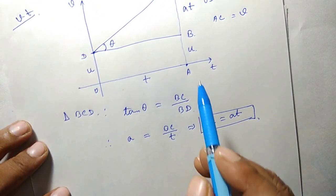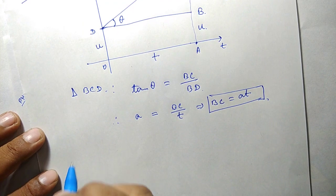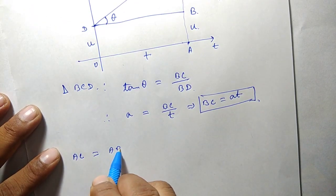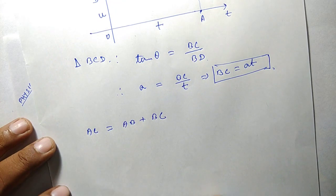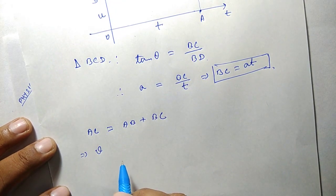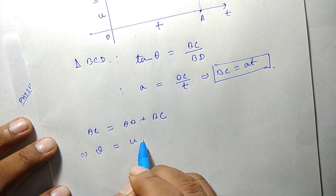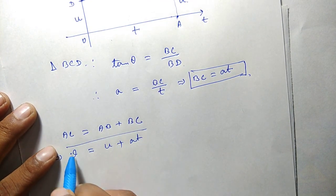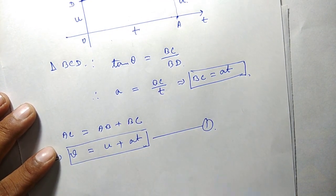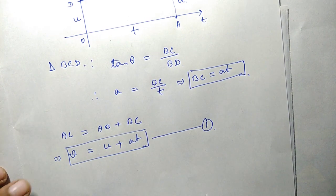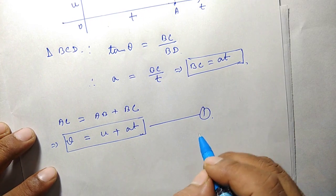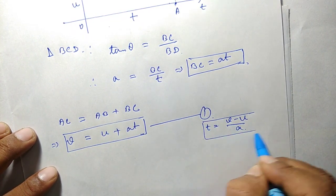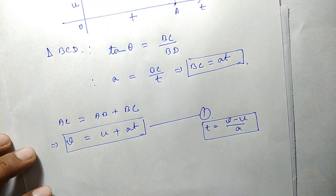Now let's find the final velocity, which is AC. From the graph, AC equals AB plus BC. AC is my final velocity v, AB is the initial velocity u, and BC equals at — we just derived that. So v equals u plus at. That is already my first equation. From here we can also note that t equals v minus u divided by a, which we will use in the next equations.